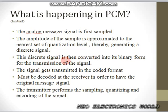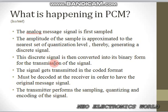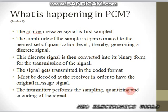This discrete signal is then converted into its binary form for the transmission of the signal. We can transmit the signal after it is converted into binary form. The signal gets transmitted in the coded format and will be decoded at the receiver in order to recover the original message signal. In the transmission part, encoding takes place and at the receiver part, decoding takes place. The transmitter performs the sampling, quantizing, and encoding of the signal — the major steps happening on the transmitter side are sampling, quantizing, and encoding.